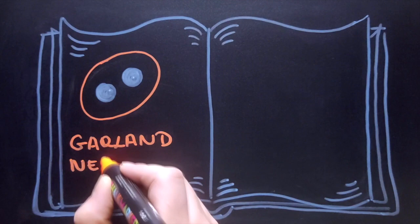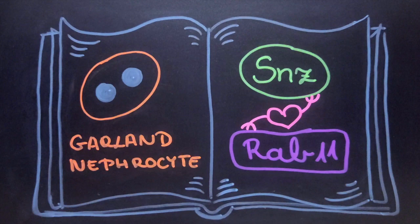In nephrocytes, however, we found that instead of lipid droplets, Snazarus interacts with Reb11. Reb11 is a key regulator protein of exocytosis.